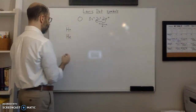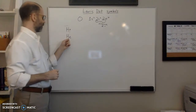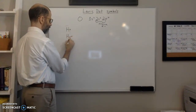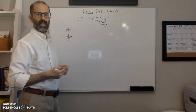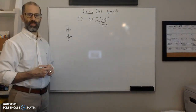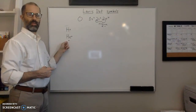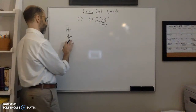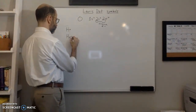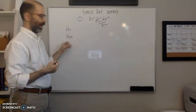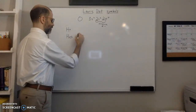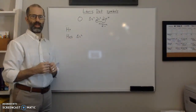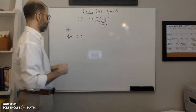Helium is special. Normally you'd go around the box one dot at a time, but according to the Lewis model, helium has a full shell with only two electrons, and those electrons are paired up. So they'll be paired together on one side. You can remind yourself of the 1s2 configuration — those two electrons are paired in the 1s orbital, spin up and spin down.